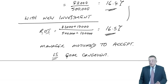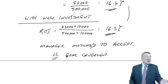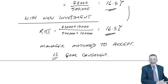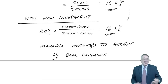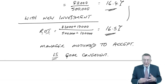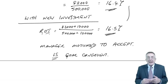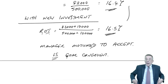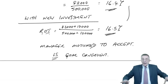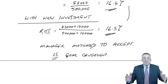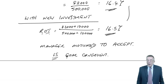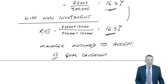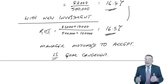Return on investment is an obvious way of measuring performance. If it goes up, good. I don't care how he achieved it. If it goes down, bad. And here, the decision has been goal congruent. But look at example two.